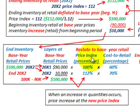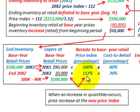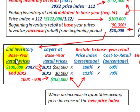When an increase in quantities occurs, the price increase is based at the new price index — 112%, not 100%. So that $10,000 amount was priced out at the new price index of 112%. Next we're going to look at later year adjustments under this dollar value LIFO retail method, examining year 20x3 and whether inventory increases or decreases.